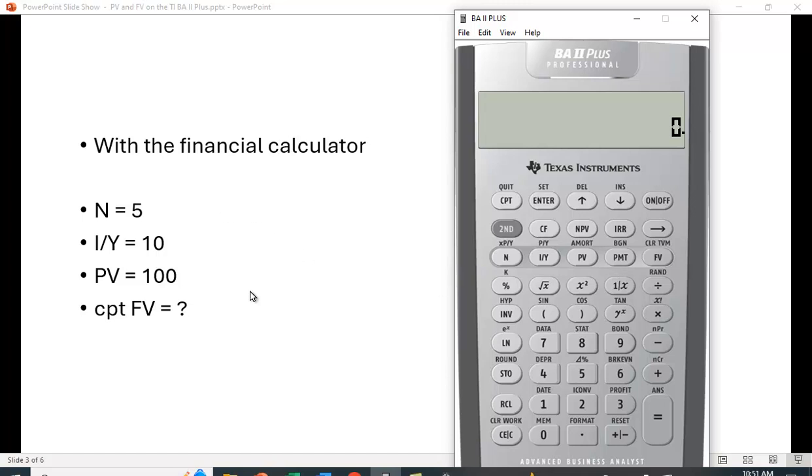But for now, let's see what happens here. If you want to clear these time value of money functions here, you hit second, and above the FV key, it says CLR TVM. So that clears the workspace here.